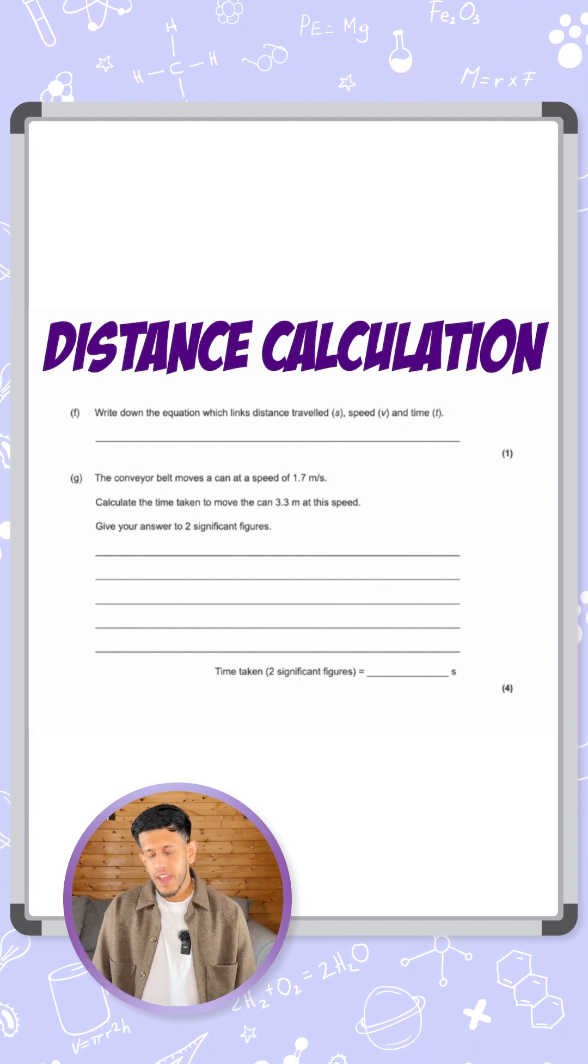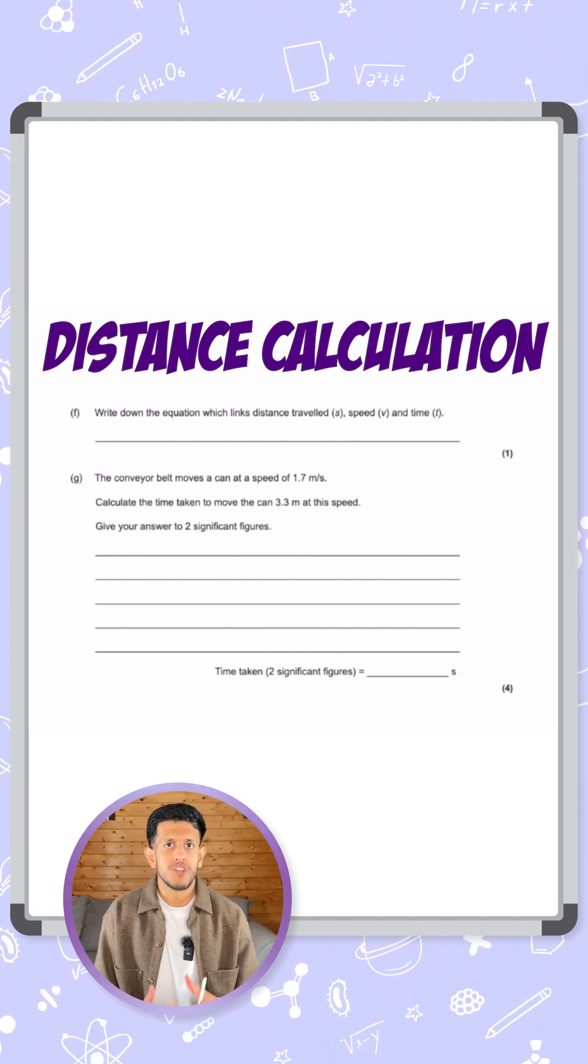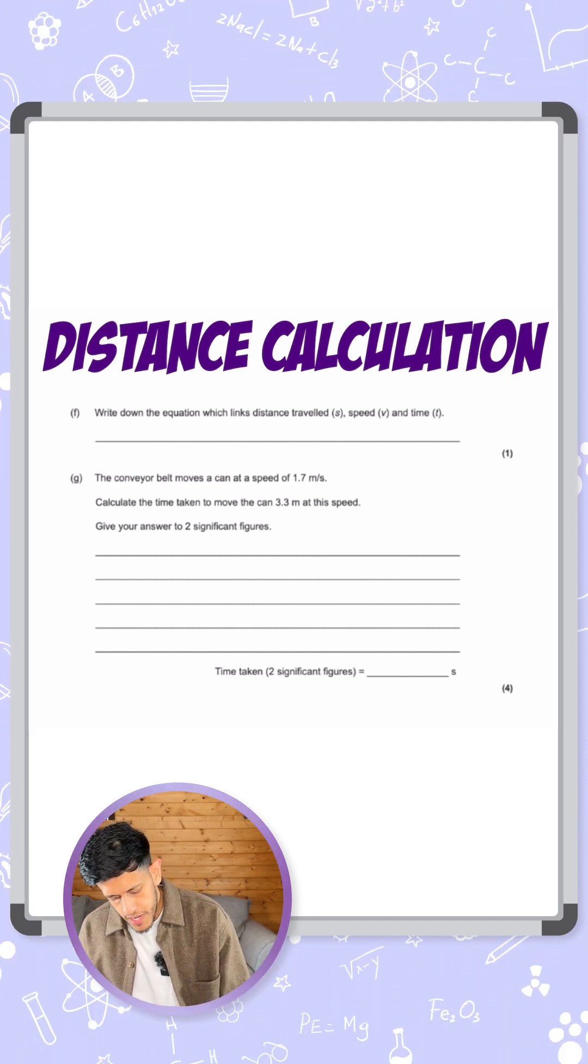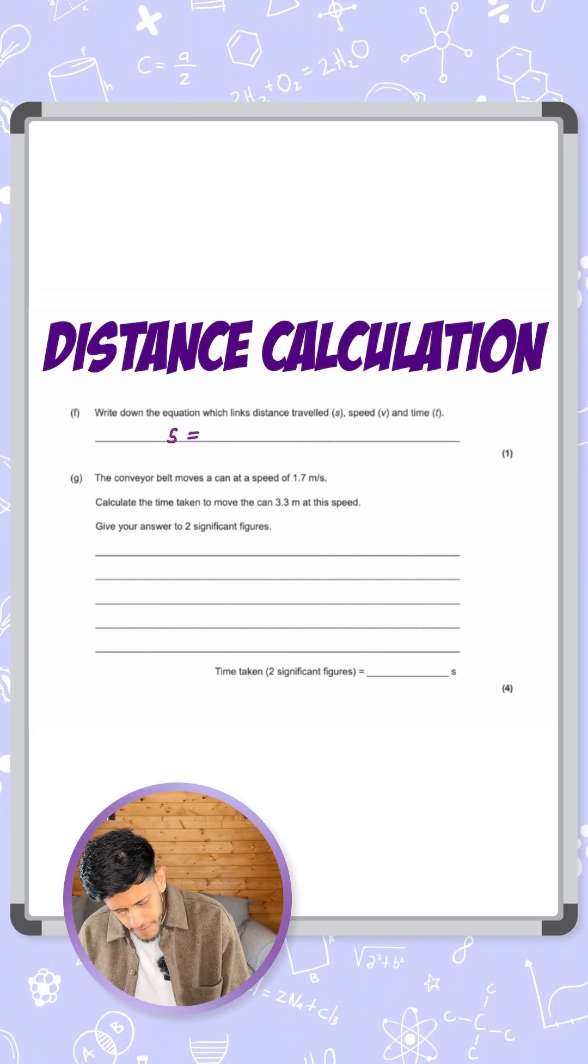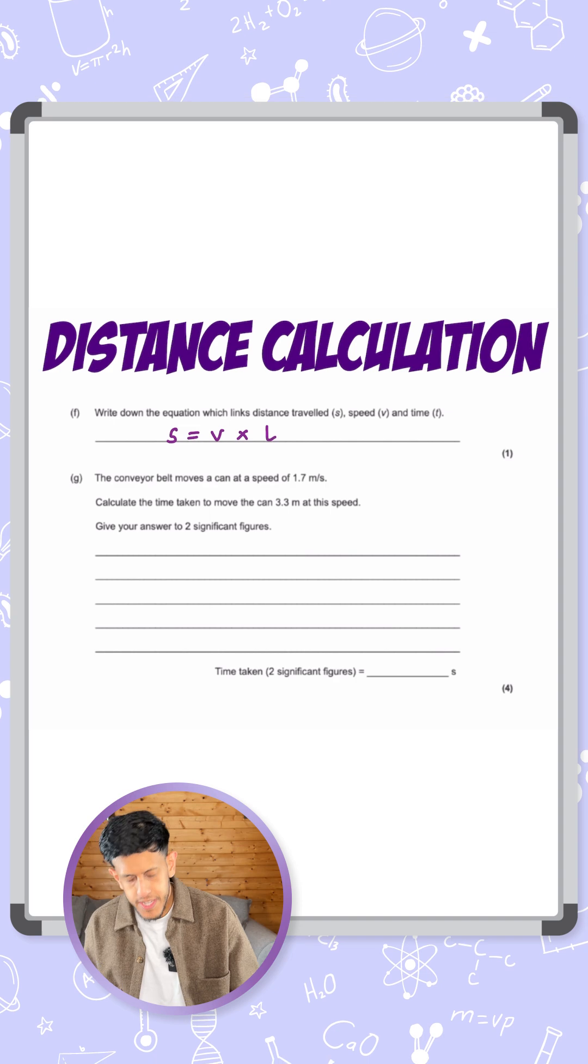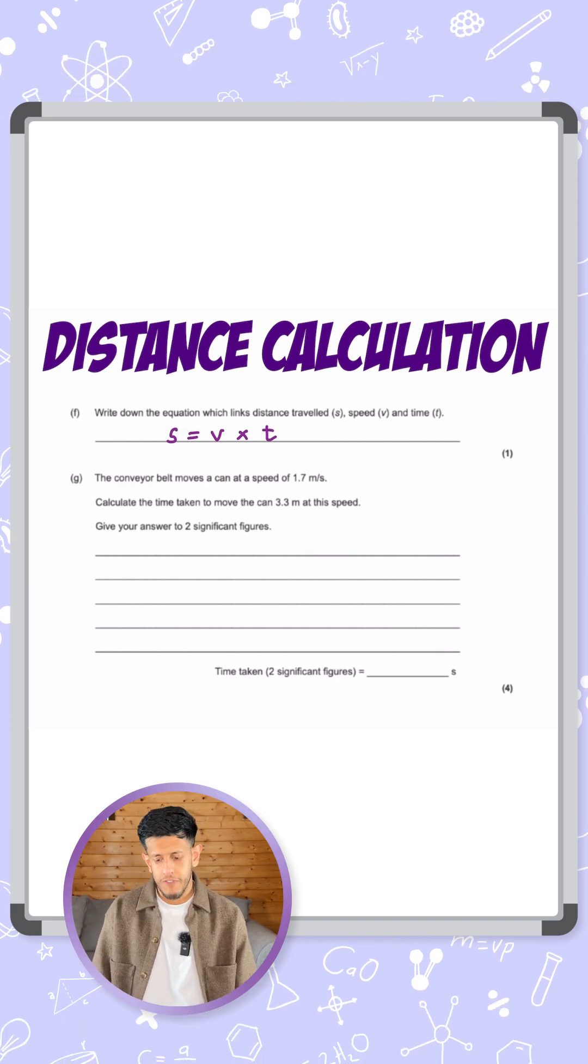Usually the equation they give it in the order that it's there. You have the formula sheet available, so don't be afraid to look at it. I'm going to put it in short form in the letters they've given: distance or s equals speed v multiplied by the time t. So s equals v times t is enough for that mark.